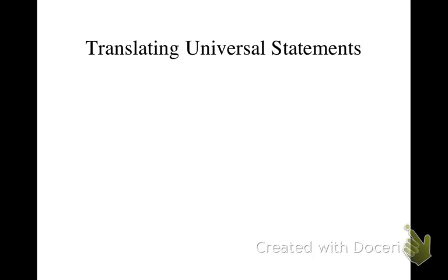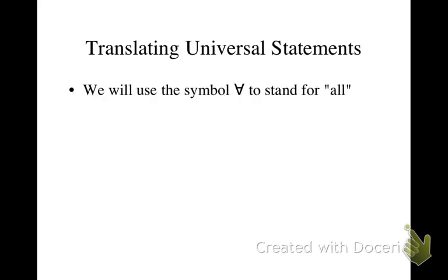This video will explain how to translate universal statements in predicate logic. We will use a symbol that looks like an upside-down A to stand for the quantifier 'all' or the quantifier 'none.'